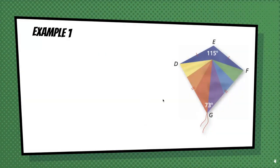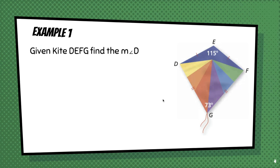So here's an example. We're given that DEFG is a kite, and we're asked to find the measure of angle D. Well, kites are quadrilaterals. And what do we know about the sum of the measures of the interior angles of any quadrilateral?